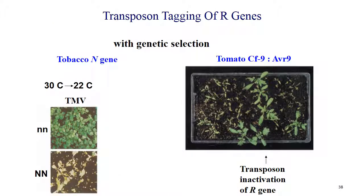The second process is transposon tagging of R genes. The two-component system of transposon tagging uses AC (activator) transposon in T-DNA and DS (dissociator) transposon gene in T-DNA. By locating these two elements, the R gene found between them can be identified. In tobacco N genes and tomato CF9 or AVR9 genes, at a specific temperature of 30°C the expression is found, while at 22°C a resistant or hypersensitive response is found, allowing identification of the gene.